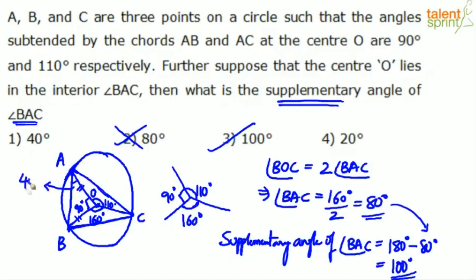Similarly, in triangle AOC, AO equals OC — both are radii of the circle. So the two base angles must be equal. Since angle AOC is 110 degrees, the remaining two angles sum to 70 degrees, giving 35 degrees each. So this angle is 35 degrees and this angle is also 35 degrees.